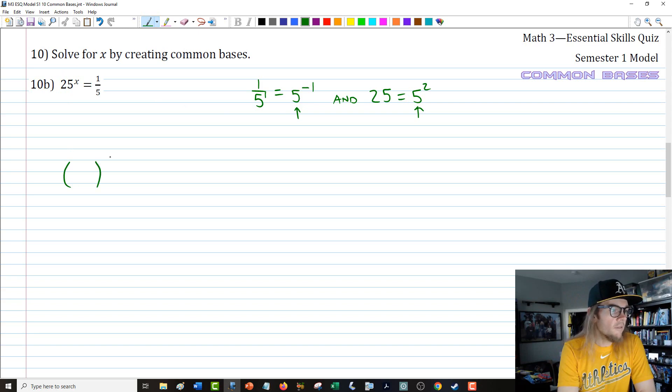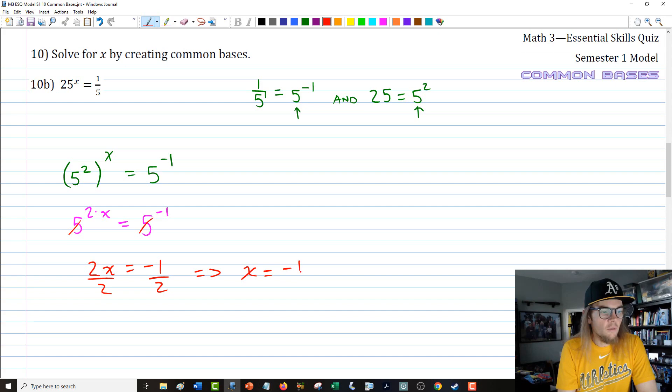25 to the x is going to be equal to 1 fifth, which is 5 to the negative 1, and 25 is 5 to the second. I'm going to use that power to a power property. So that left side is going to be 5 to the 2 times x, which equals 5 to the negative 1. Once those bases are the same, 2x equals negative 1. If we divide both sides by 2, we get that x is equal to negative 1 half.